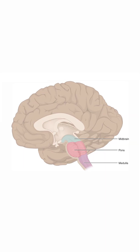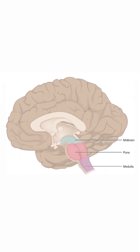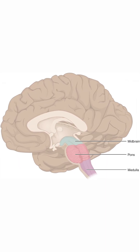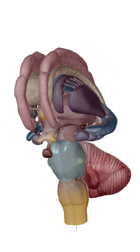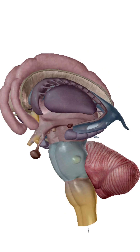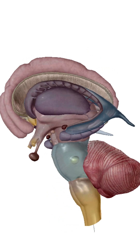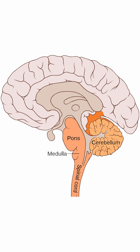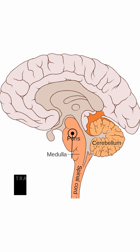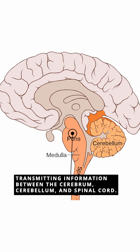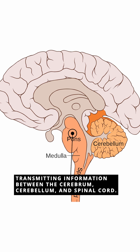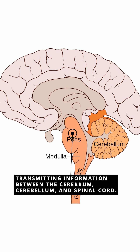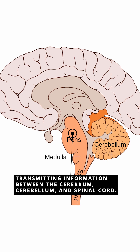Positioned between the medulla and the midbrain, the PONS appears as a bulging region on the anterior part of the brainstem. It primarily acts as a relay station, transmitting information between the cerebrum, cerebellum, and spinal cord.